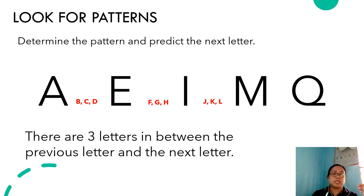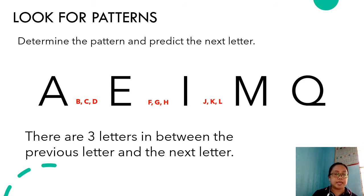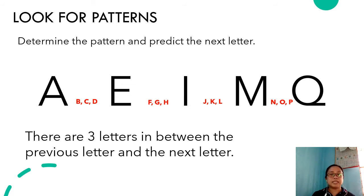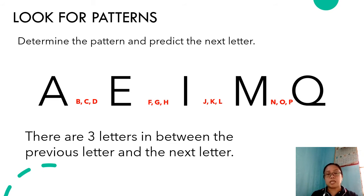We have the letters J, K, and L in between the letters I and M. Therefore, the letters N, O, and P — these three letters should be in between the letter M and the letter that comes after M, which in this case is the letter Q.